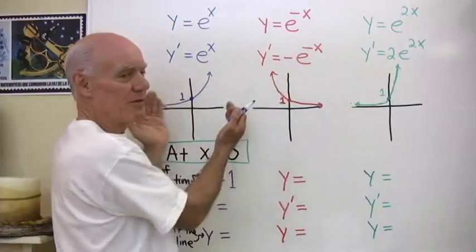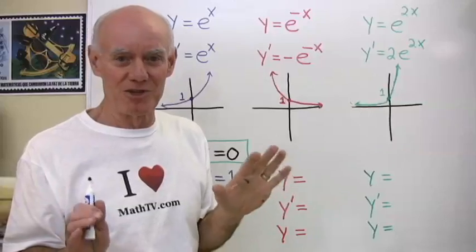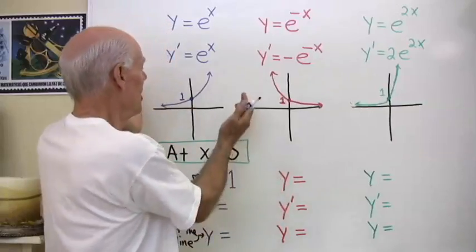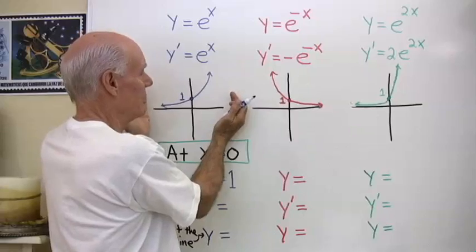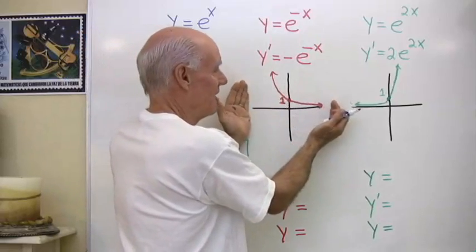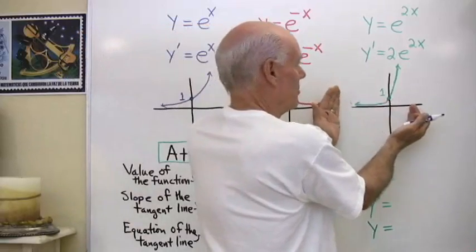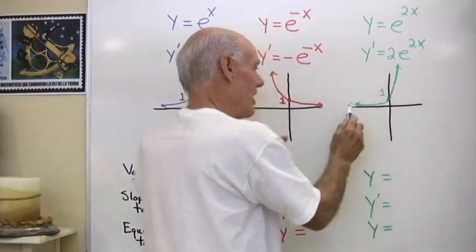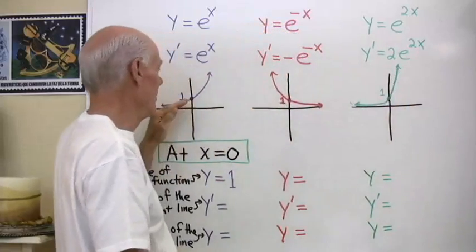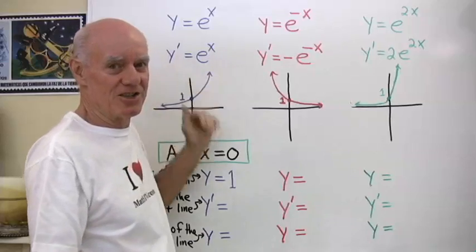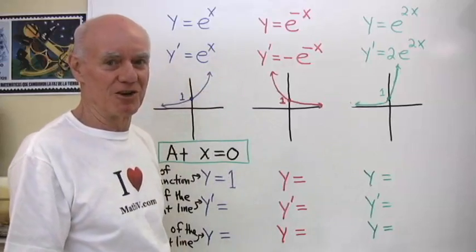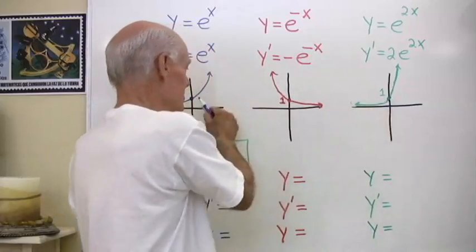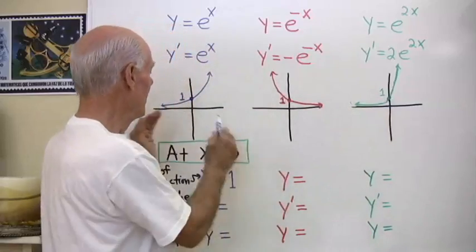Here are the graphs of the functions — not very accurate, but just so you can get an idea of the differences between them. Y equals e to the x, y equals e to the negative x, y equals e to the 2x. Y equals e to the 2x just goes up faster than y equals e to the x.